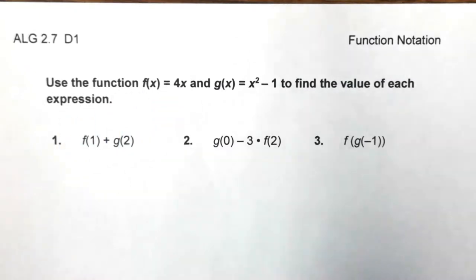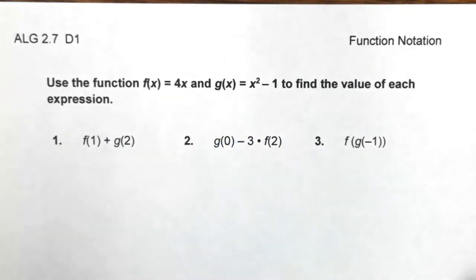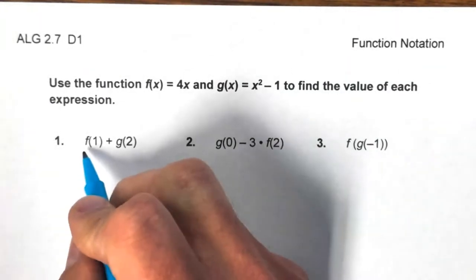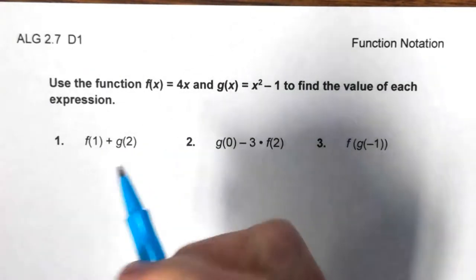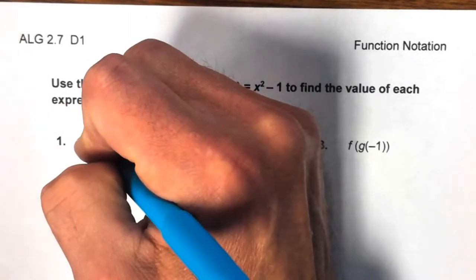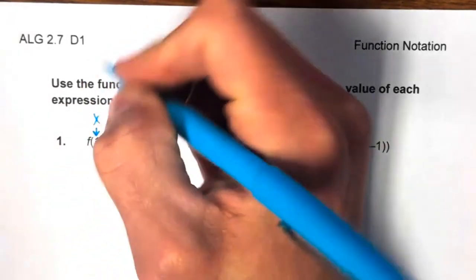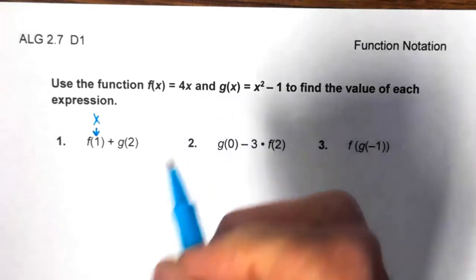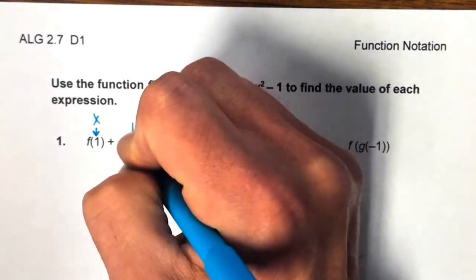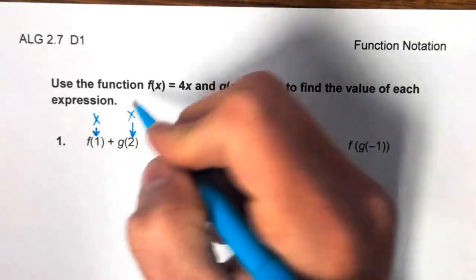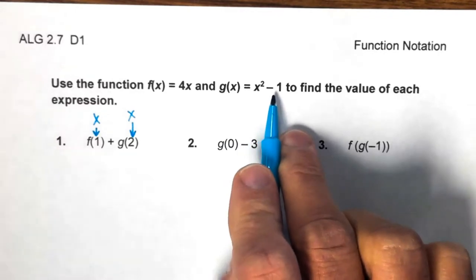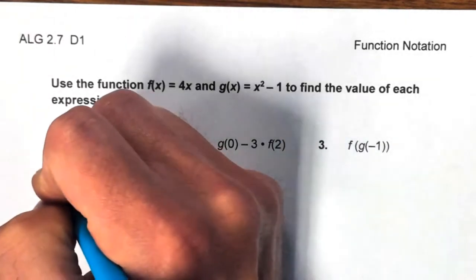Number one: use f(x) = 4x and g(x) = x² - 1 to find the value of each expression. For f(1) + g(2), we will plug in 1 for x in f(x) = 4x, and plug in 2 for x in g(x) = x² - 1.